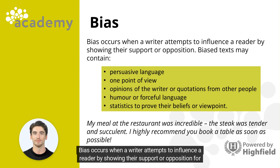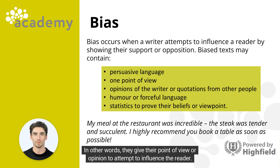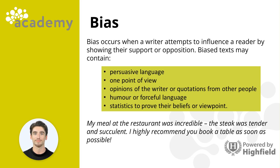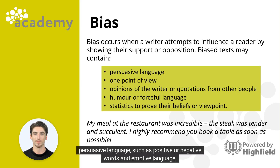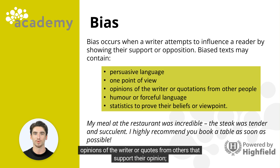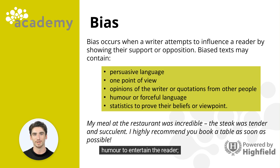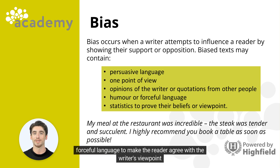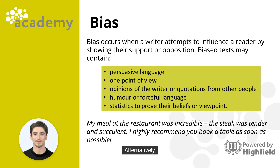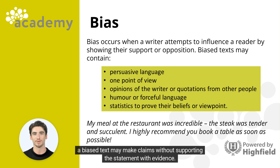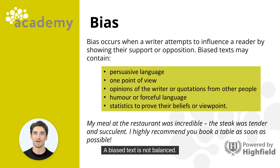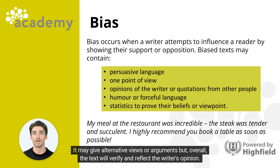Bias occurs when a writer attempts to influence a reader by showing their support or opposition for something or someone — giving their point of view or opinion to influence the reader. Biased text may contain persuasive language such as positive or negative words, emotive language, opinions of the writer or quotes that support their view, humor to entertain, forceful language to make the reader agree, and statistics that validate their viewpoint. A biased text may also make claims without supporting evidence. A biased text is not balanced — it may give alternative views, but overall will verify and reflect the writer's opinion.